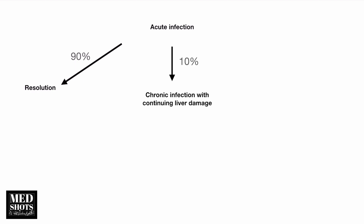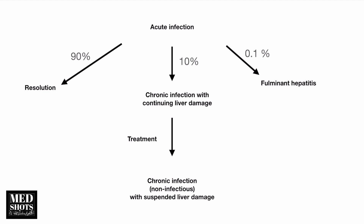The clinical progression is: acute infection can go into 90% resolution and 10% chronic infection with continuing liver damage. 0.1% can go into fulminant hepatitis. With treatment, we can convert this into suspended liver damage, but if you stop treatment or there is a mutation in the virus, acute and chronic liver damage can occur.